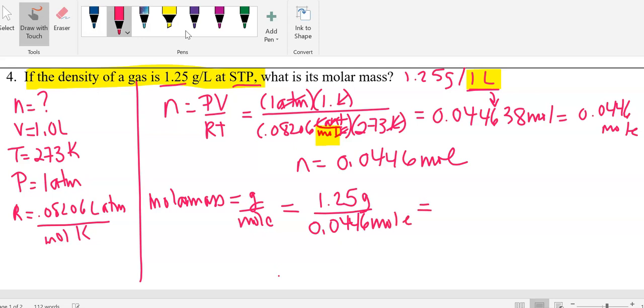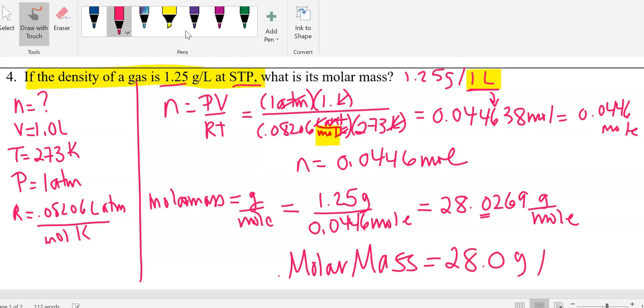We know that 1.25 grams represents 0.0446 moles. That's the N we just calculated. And that comes out to 28.0269 grams per mole. We're rounding to 3 sig figs. So molar mass is equal to 28.0 grams per mole.